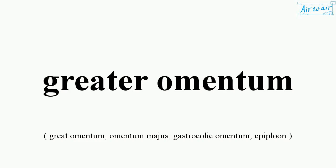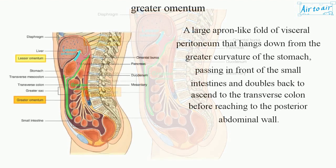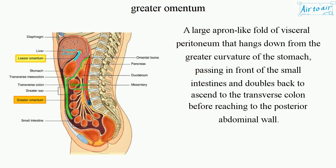Greater omentum: a large apron-like fold of visceral peritoneum that hangs down from the greater curvature of the stomach, passing in front of the small intestines, and doubles back to ascend to the transverse colon before reaching the posterior abdominal wall.